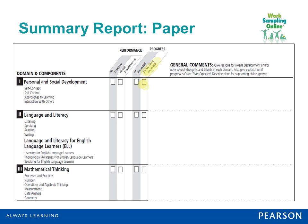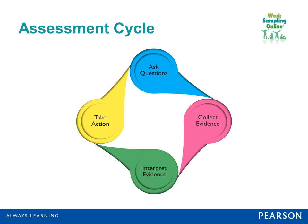When you think about the Work Sampling System, you're constantly collecting information and asking yourself: what exactly should children be learning at a certain point in the school year? These questions are part of the Work Sampling System's assessment cycle. The cycle begins with asking questions — for example, what do the 24 children in my kindergarten classroom know about number and quantity? Then you collect evidence to answer that question.